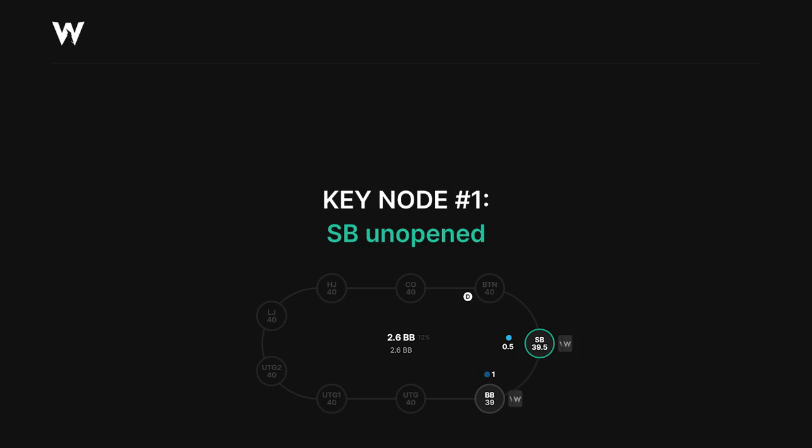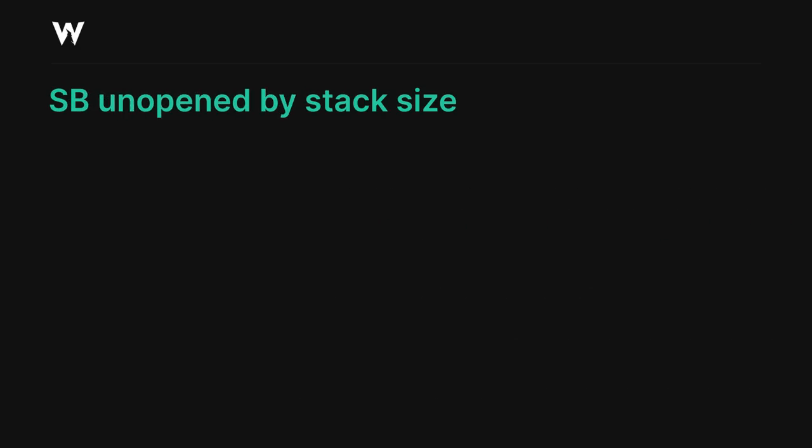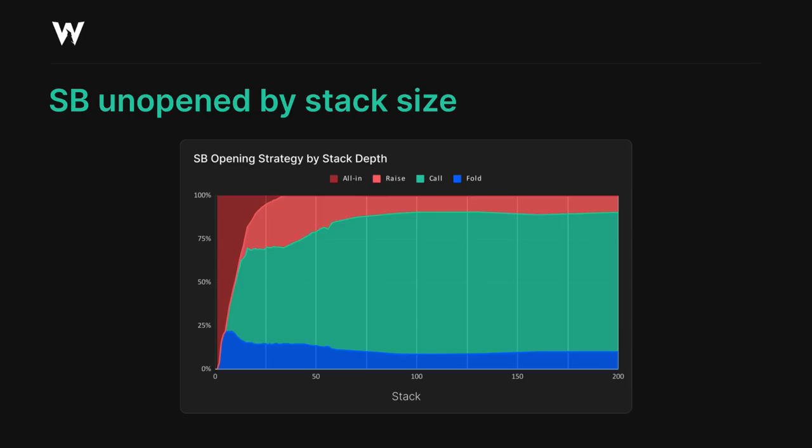This is possibly the most important node of the blind vs blind game tree, since it's the one which occurs far more often than any other, and all the subsequent nodes we're going to look at in this video are simply a product of the small blind's strategy when it folds around to them. Let's break down this graphic showing the evolution of the small blind's unopened strategy at all stack sizes from 7 big blinds up to 200 big blinds in a 9-handed game.